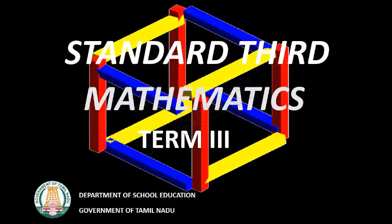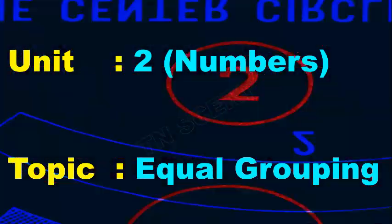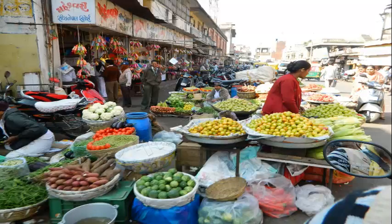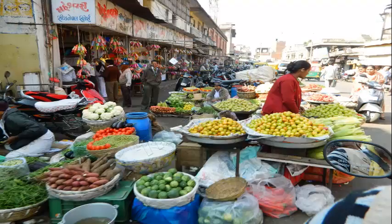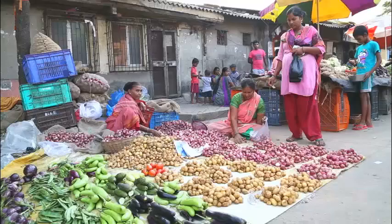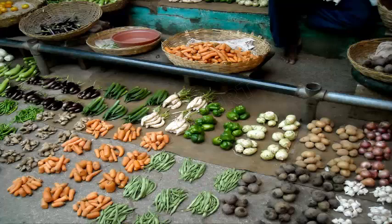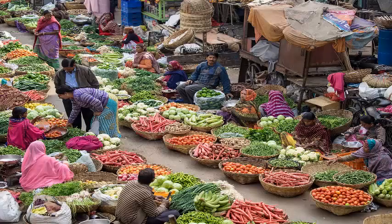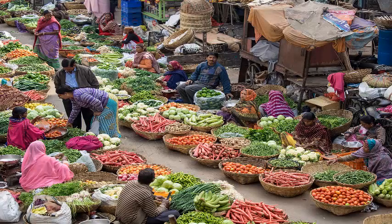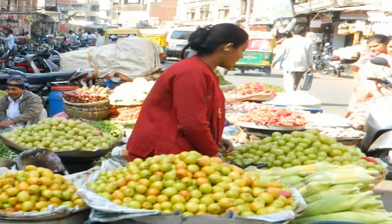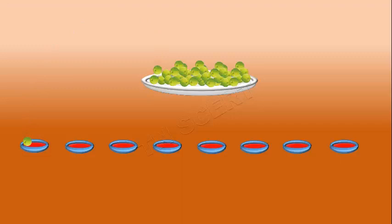Division can also be done by equal grouping. This is Rangama's shop. She used to arrange the vegetables into equal groups called Puru to sell them. Rangama has got 48 gooseberries and arranges them into groups of 6 each.